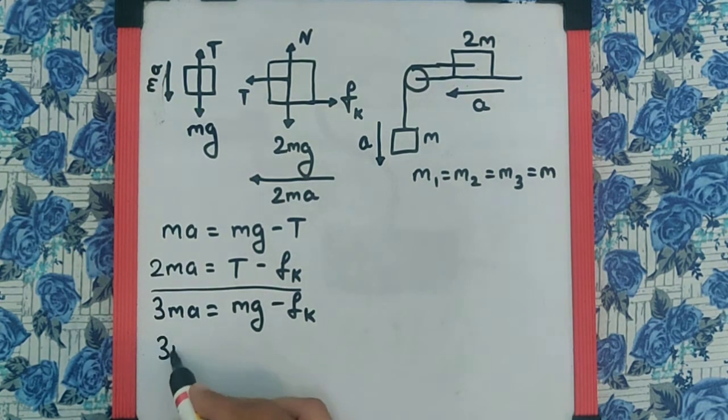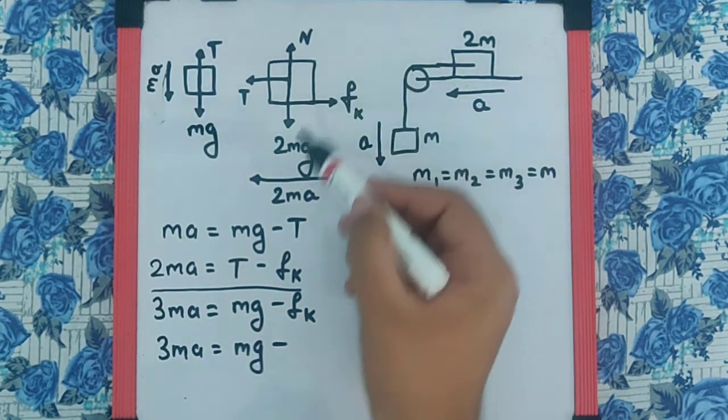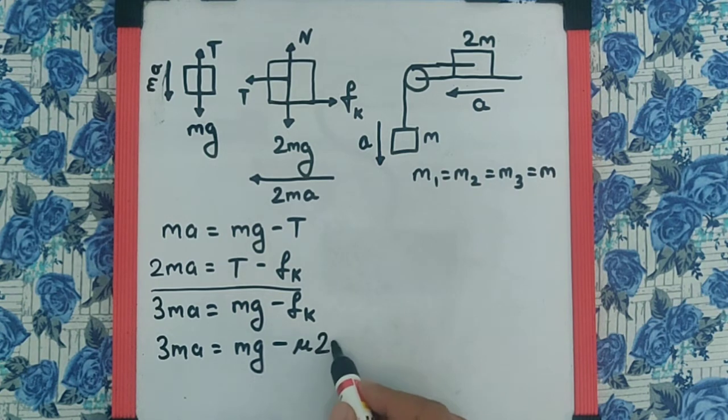Now, we know friction is mu N, and N from the diagram is 2Mg. So friction equals mu times 2Mg.